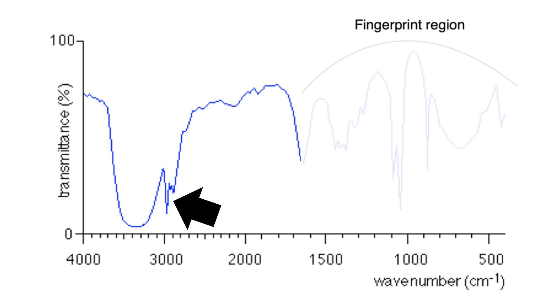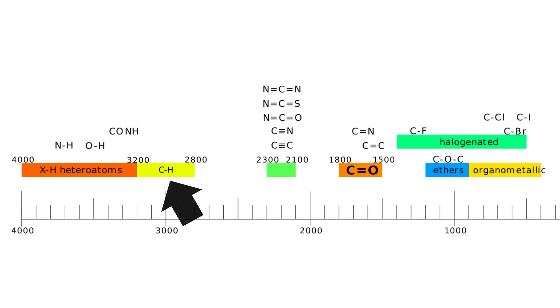The first peak is located around the 3000 mark. If we check that location from our correlation table we observe that this corresponds to a CH group.